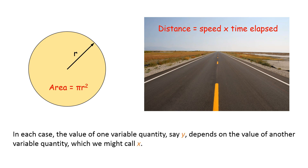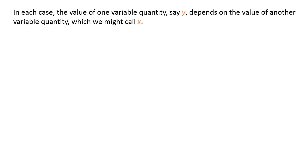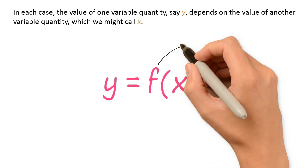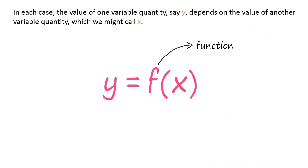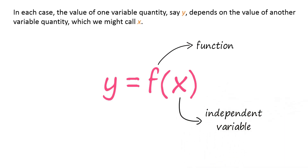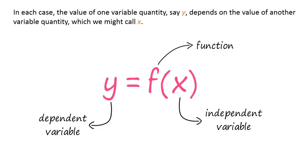In each case, the value of one variable quantity, say y, depends on the value of another variable quantity, which we might call x. We say that y is a function of x and write this symbolically as y equals f of x. In this notation, the symbol f represents the function. The letter x is the independent variable representing the input value of f, and y is the dependent variable or output value of f at x.